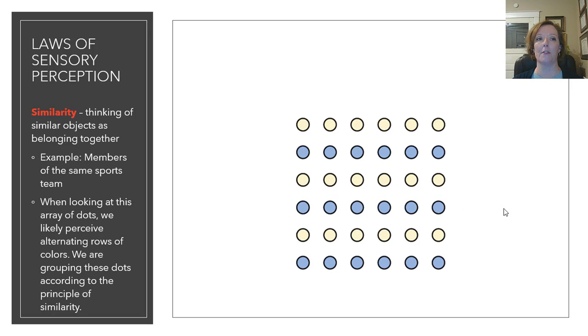The next Gestalt Law of Sensory Perception is similarity. We think of similar objects as belonging together. So, think about when you're watching a game on TV or you are in a stadium. Members of the same sports team we put together very easily because they look alike. Their jerseys are the same, their pants are the same, their helmets are the same if you're looking at a football game. So, this is the law of similarity. When we look at this array of dots, we likely perceive the alternating rows of colors rather than just a big square of dots. We're grouping these dots according to the principle of similarity.